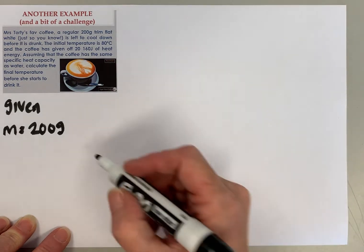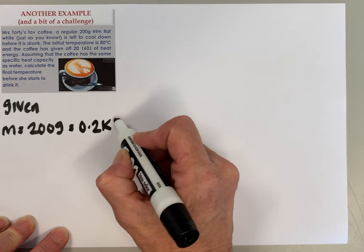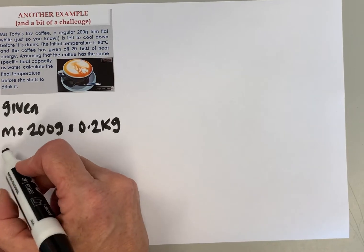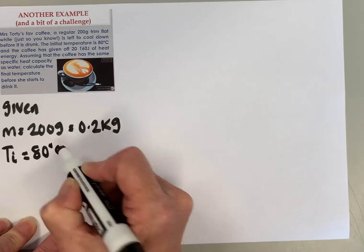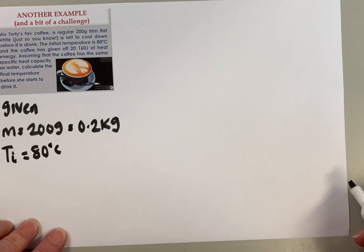We need to make sure our masses are in kilograms, so 200 grams is 0.2 of a kilogram. Our initial temperature is 80 degrees, so I'm going to write that with Ti = 80°C.